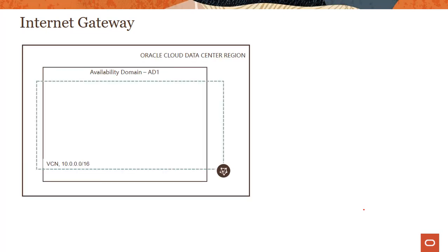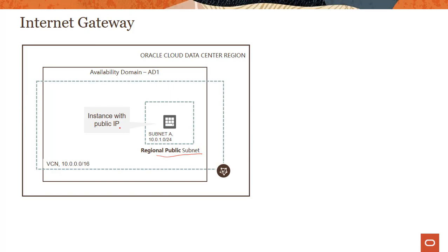Having briefly looked at route tables, let's talk about the different gateways supported in the OCI VCN service. The first gateway is called internet gateway. As the name specifies, it's a gateway which takes traffic in and out from a public subnet. As seen in the previous slides, we have a public subnet here — it can be regional or AD-specific — and there's an instance which has a public IP. It can be a web server or a load balancer.